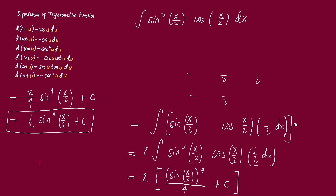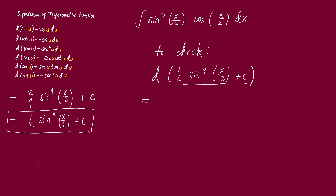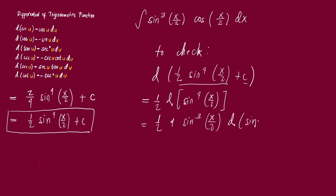To check, we get the differential of our result: one-half sine raised to 4 of x/2, plus C. The differential of C is 0, so we focus on the first term. This equals one-half times the differential of sine raised to 4 of x/2. Using the power formula for differentiation, this becomes one-half times 4 sine cubed of x/2, times the differential of sine of x/2.